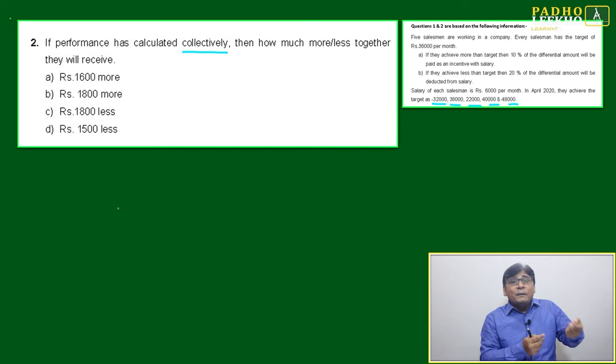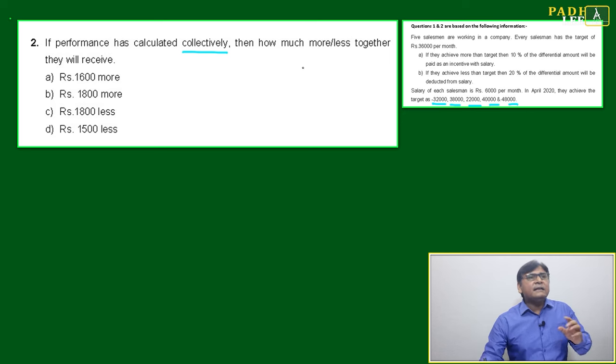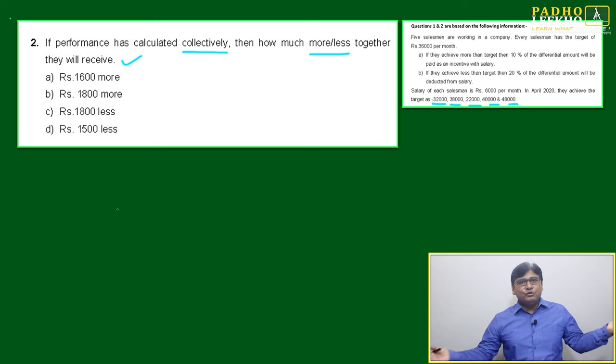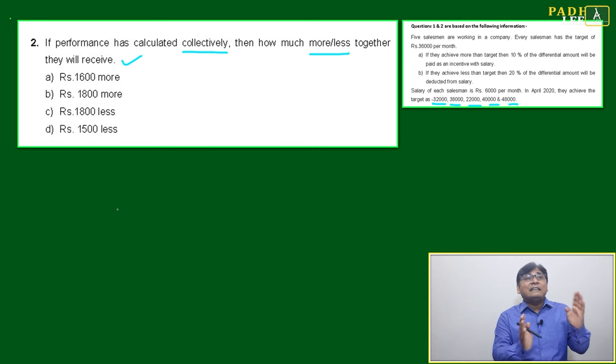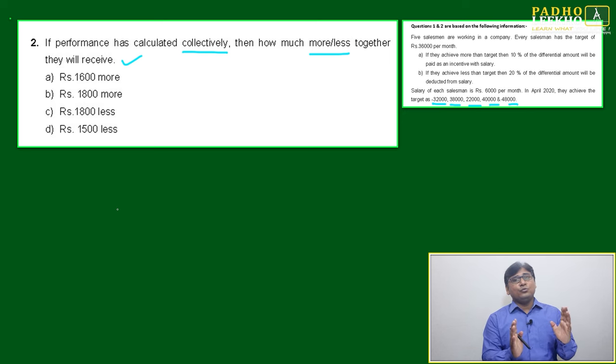If one person is selling equivalent to these five persons, then how much more or less together will they receive? Earlier, how much were they getting as individuals after deduction or incentive? If one person is performing equivalent to this, how much will he get? Find the difference between these two.